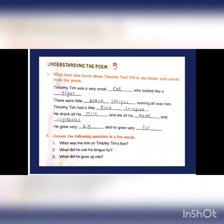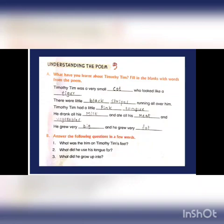Now let's start to complete this exercise — Understanding the Poem. Section A: What have you learnt about Timothy Tim? Fill in the blanks with words from the poem. First line: Timothy Tim was a very small ___ who looked like a ___. The answer is cat and tiger. Timothy Tim was a very small cat who looked like a tiger.